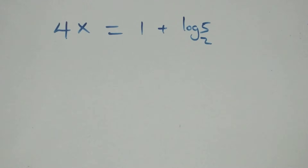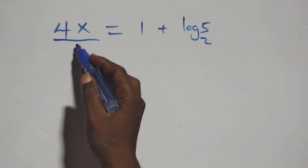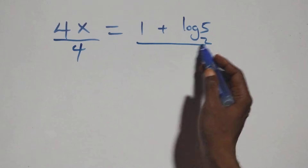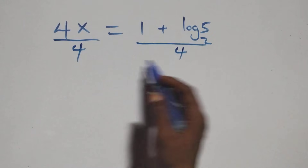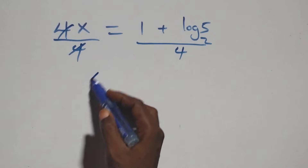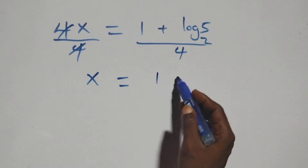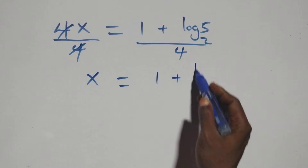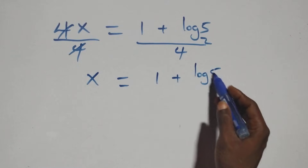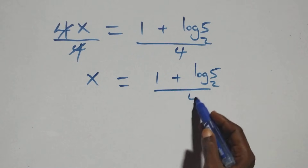Then we divide both sides by 4. The 4s cancel, and we arrive at: x equals to 1 plus log base 2 of 5, all over 4.